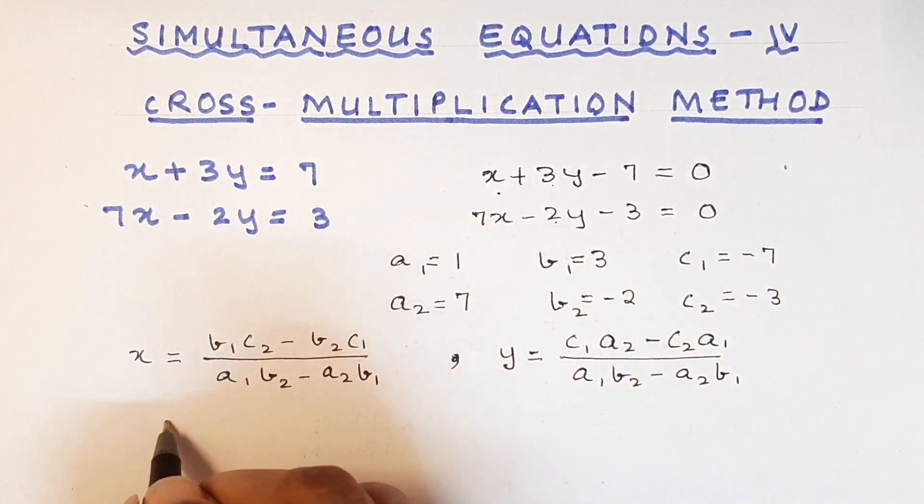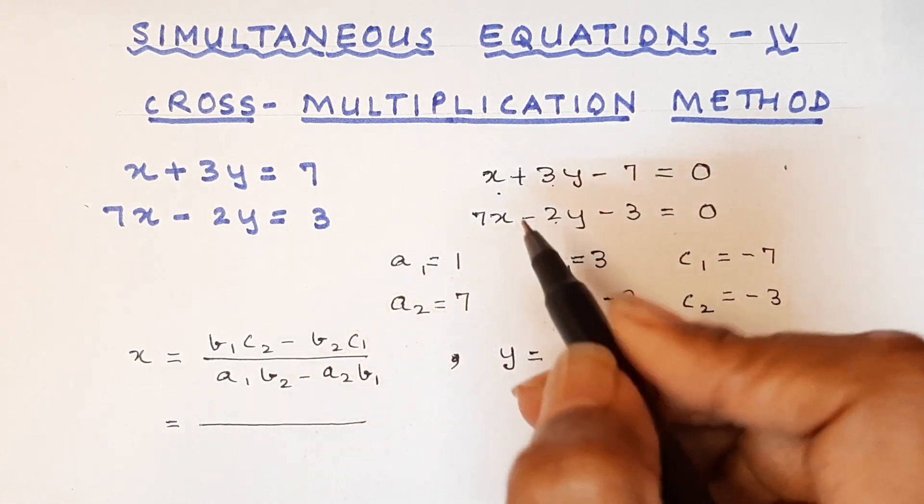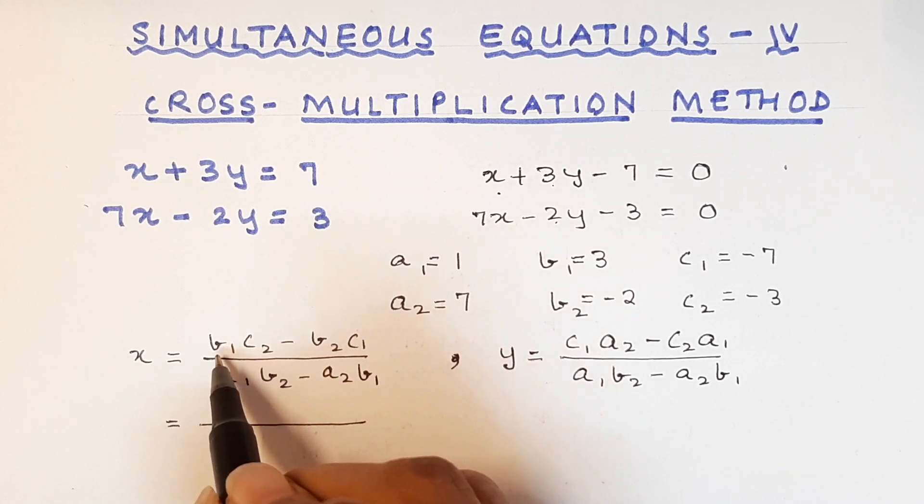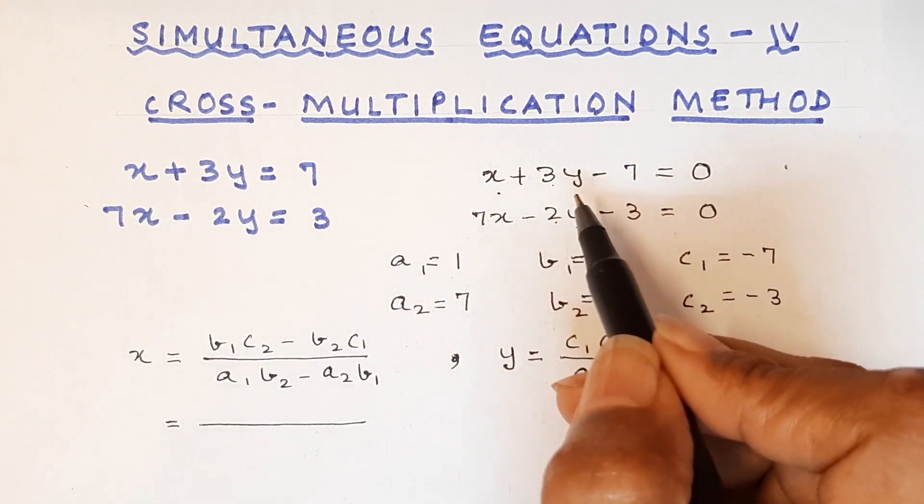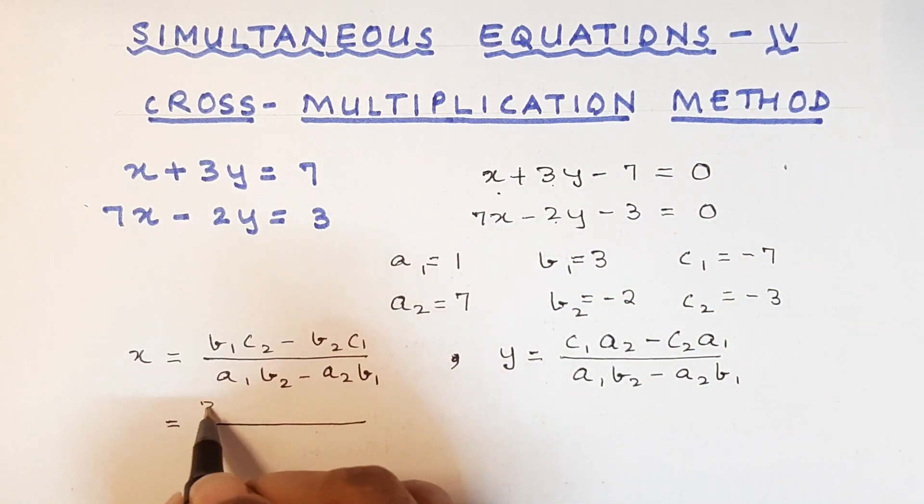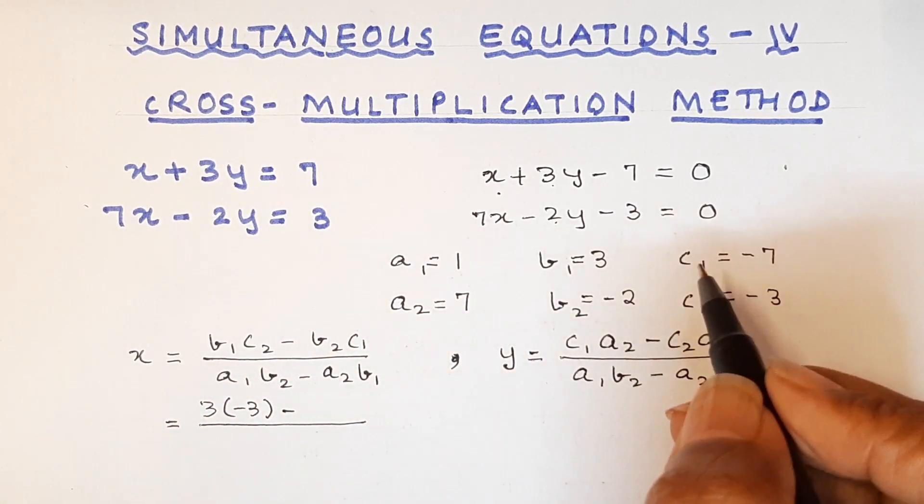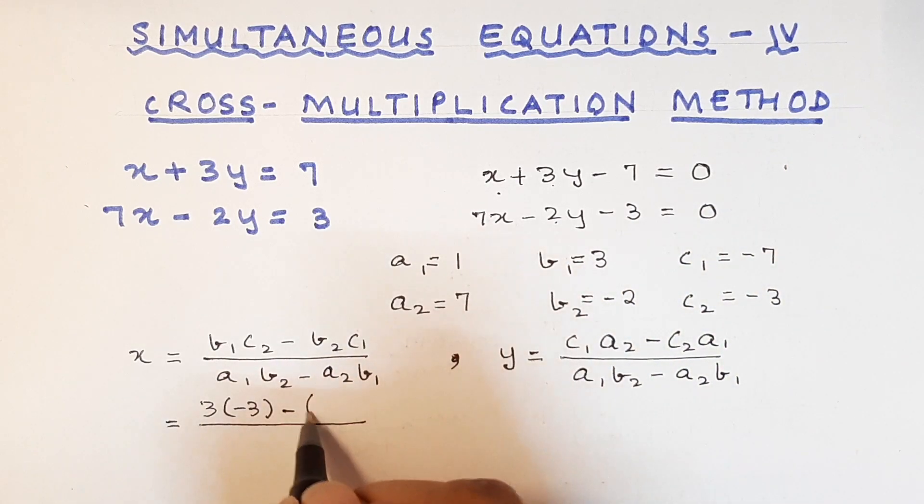Now let us see if we can substitute. Again, if I want x, I will take in the numerator the terms which are not the coefficients of x. So b1c2 will be like this. So it will be 3 into bracket minus 3 minus now we take b2c1 like so. So it will be minus 2 into minus 7. Got it?